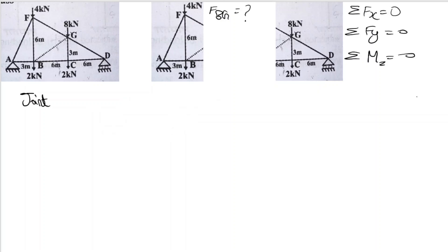How will we know? The 8 kN load is acting downward. To oppose this, BG will act as a complement — it will compress this member, so member BG is compressive.